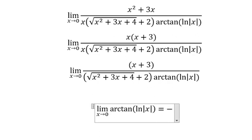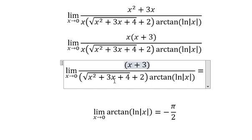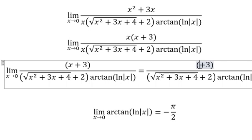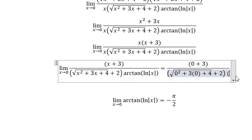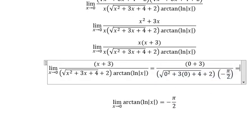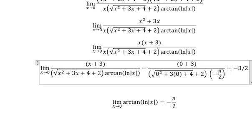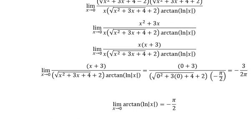So in this case, we just put number zero in here, here, and here, and we have the final answer. This one we have negative π over two, and we got the final answer: negative three over two π. This is the end.